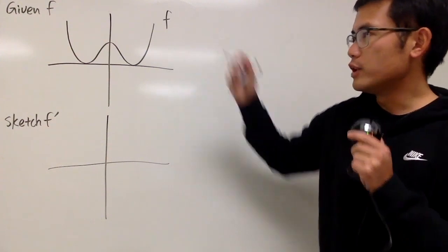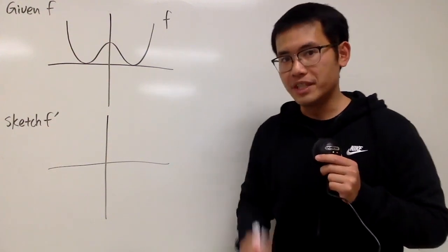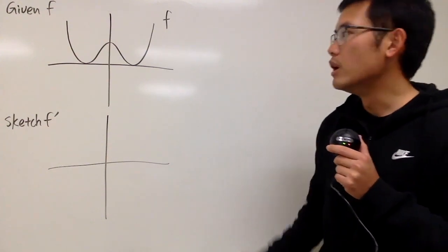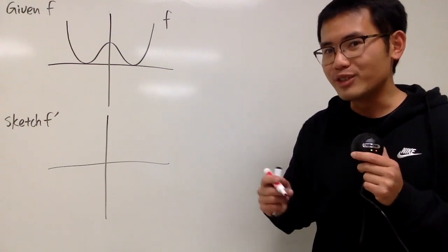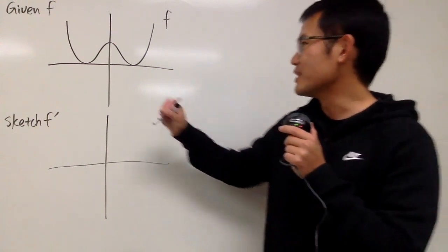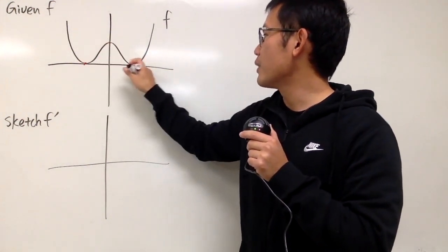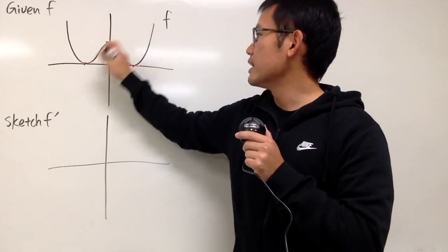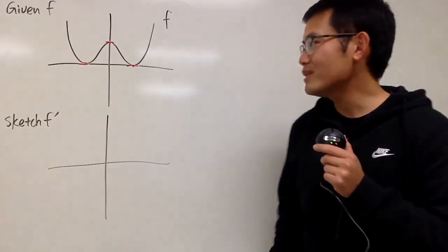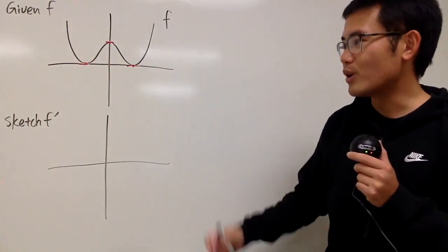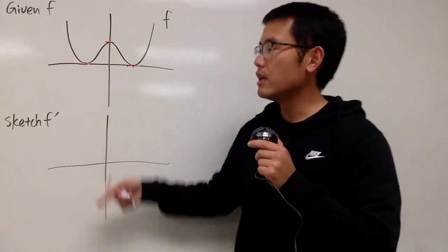Here we are given the graph of the original, and we'll sketch its derivative. Look for the easy numbers first, namely the horizontal tangent lines. As we can see, we have them here, here, and here. The slope at these three points will be zero, meaning that the derivative will be zero at these three points.